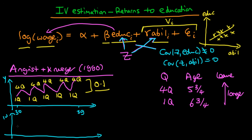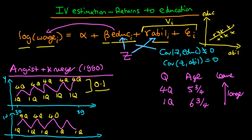When Angrist and Krueger replaced years of education with log wage on the vertical axis, they found a similar pattern — the same jagged sawtooth structure. When they looked at the troughs in this pattern they found they were exactly the same: individuals born in the first quarter of the year tended to earn less than those born in the fourth quarter. By graphically illustrating this relationship it became quite clear as to the causal nature of what was going on — the instrumental variable was causing differences in education, which in turn was causing differences in log wage. They found the difference in log wage between the first and fourth quarter individuals was about 0.01.